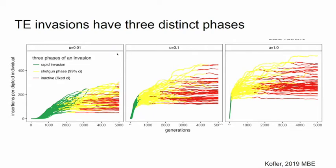I suggest that transposable element invasions have different phases. The first is the rapid invasion phase, where copy numbers just go up. Then there is a stagnation phase — no copy number increase is observable, but this is due to segregating cluster insertions; they are all segregating yet copy numbers stagnate. This is what I call the shotgun phase. In the end, due to drift, one cluster insertion fixes, and then the transposable element is entirely dead — the inactive phase. So basically three phases of a TE invasion, at least when piRNA clusters are involved.